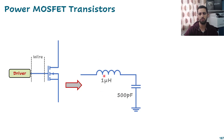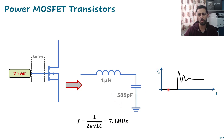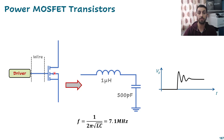The problem is that the inductance and capacitance will resonate. For example, with 1 microhenry of wire inductance and 500 picofarads of input capacitance, the resonant frequency will be about 7.1 megahertz. That's a problem. This is one of the consequences of a long distance between the driver and the MOSFET gate, which is why manufacturers recommend placing the MOSFET as close as possible to the driver.